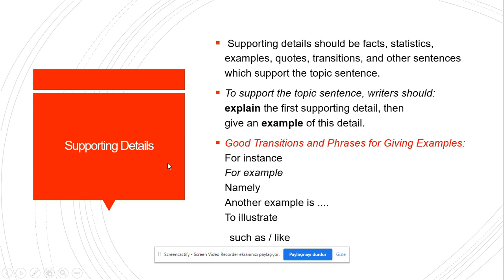Supporting details should be facts, statistics, examples, quotes, transitions, and other sentences which support the topic sentence. To support the topic sentence, writers should explain the first supporting detail and then give an example of this detail.